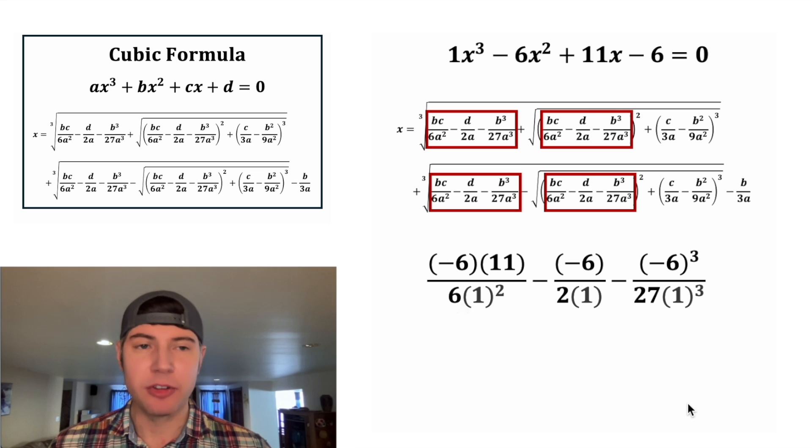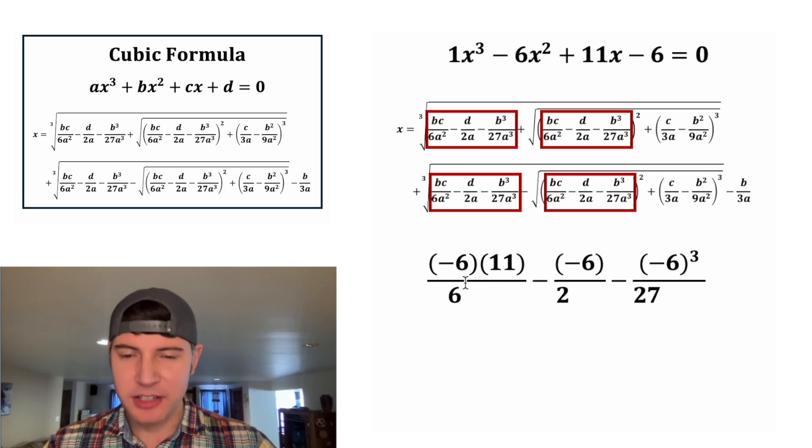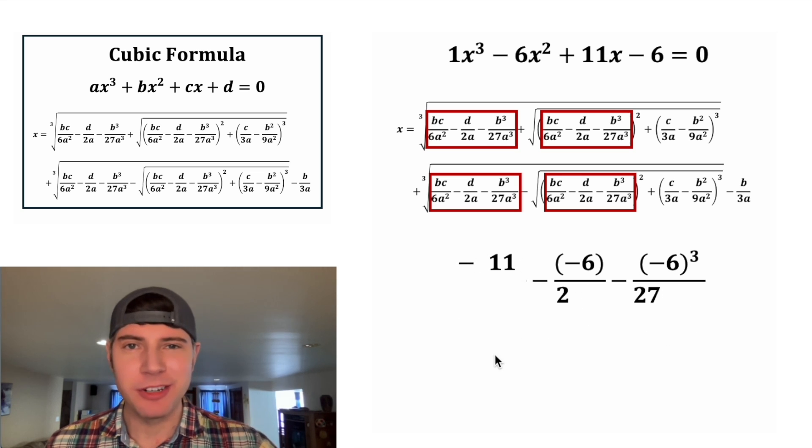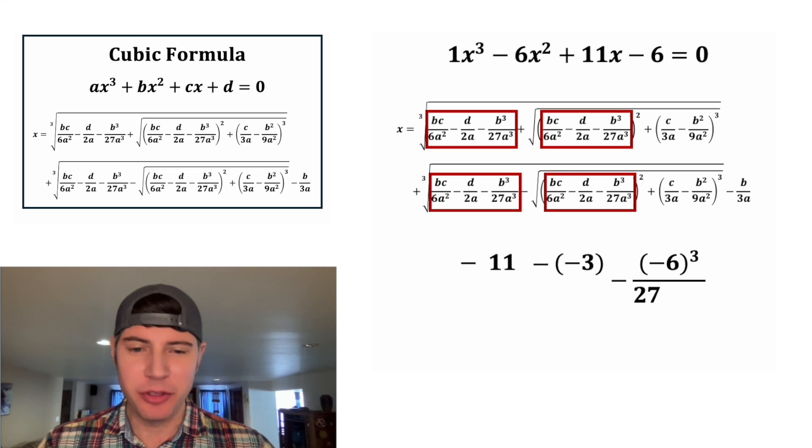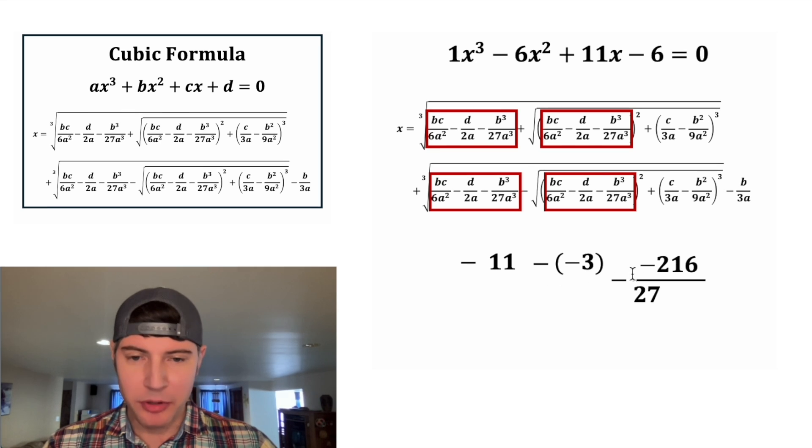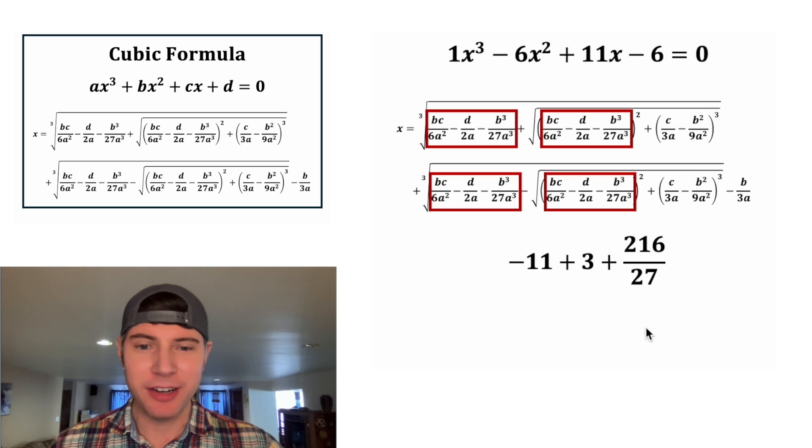Multiplying by 1 isn't going to do anything, so those can vanish. And then this 6 on top and bottom can cancel each other out. And then for this middle one, the 6 divided by 2 is equal to 3. And then for the third one, negative 6 cubed is negative 216. And now both of these double negatives will become pluses. Let's smush this stuff together. And 216 divided by 27 is 8.